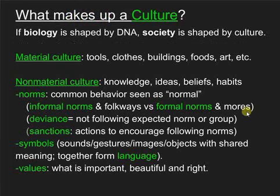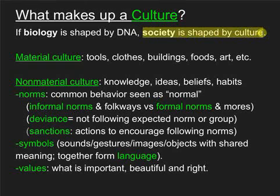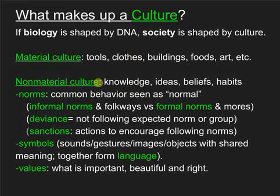So if biology is shaped by our genetics, which is made up of DNA, society is shaped by culture. What makes up culture? Well there's material culture — things like your clothes, your tools, your food, your buildings. There's non-material culture too: things like norms, the way we tend to do things, what we see as normal. Symbols — even the words that I'm saying — sounds and images that we have a shared meaning for, that means something to us as a people. And together they form language, which we talked about last time. And then lastly, values: what we see as important, what we see as desirable, beautiful, what we see as right and good.